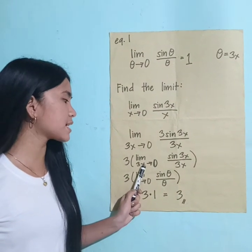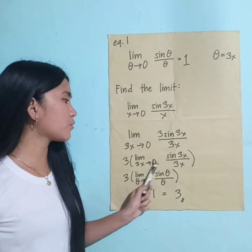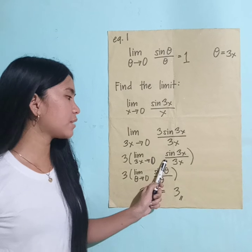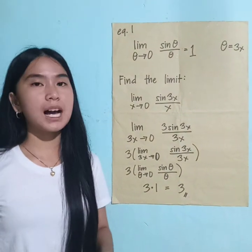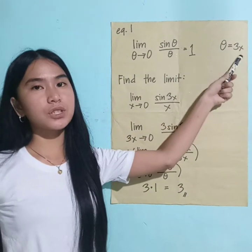So we have 3 times the limit of 3x as it approaches 0, sine of 3x divided by 3x. The reason I did that is because I would let theta equal 3x.